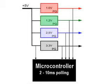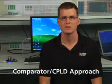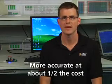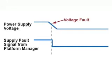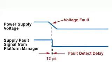Traditionally, designers have utilized microcontrollers with analog-to-digital converters (ADCs) to monitor voltage rails. The downside of this approach is slow response times coupled with accuracy limitations that can affect system reliability. Platform Manager uses a comparator CPLD approach, which can be several orders of magnitude faster and more accurate at about half the cost of ADC-equipped microcontrollers. Platform Manager provides a threshold accuracy of 0.7%, with reaction time measured in microseconds instead of milliseconds. This accuracy and fast response minimizes failures such as flash corruption.